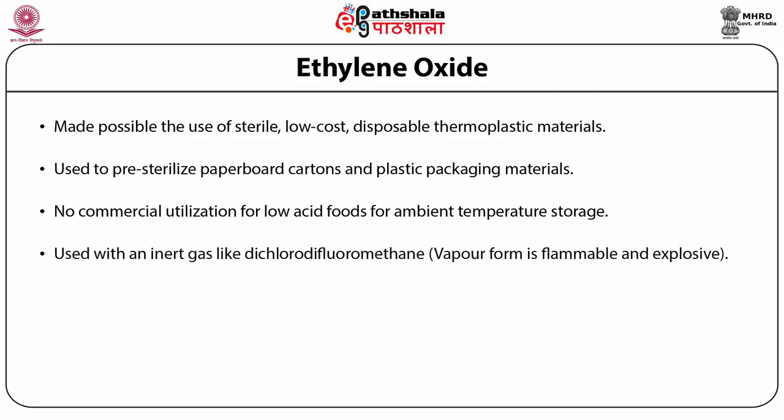The vapor form of ethylene oxide is flammable and explosive and is therefore employed as a mixture with an inert gas such as dichlorodifluoromethane. An important consideration in bulk sterilization of preformed packaging materials is ethylene oxide's ability to permeate and contact all surfaces that need to be sterilized. The method can be carried out at low temperatures and damages relatively few materials.